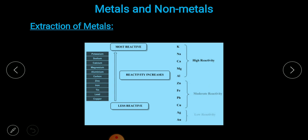The most reactive metal in this reactivity series table is potassium, then sodium, then calcium, then magnesium, then aluminum. Zinc, iron, lead, and copper are moderate reactive. Silver and gold are very less reactive — they don't react with any compound.